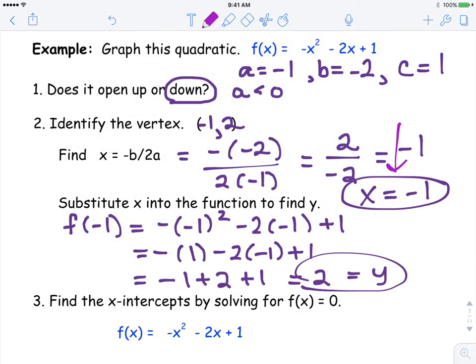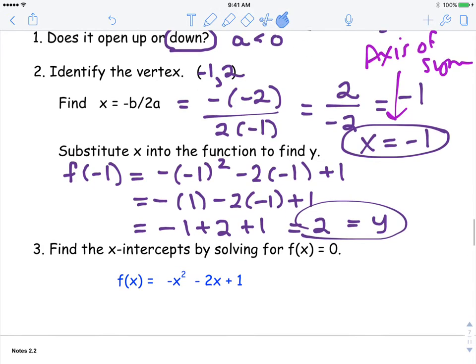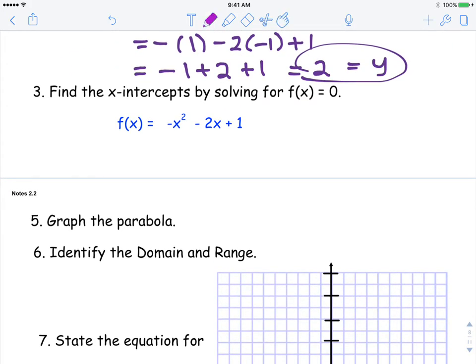This is your axis of symmetry. Alright, moving on. We're going to find the x-intercepts. So we're going to set this function equal to zero and solve for x.